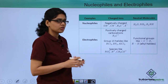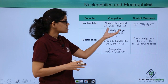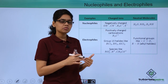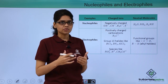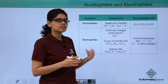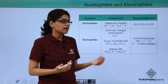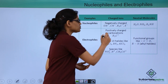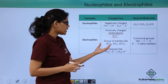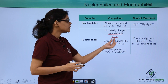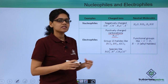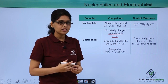So those are the examples of nucleophiles as charged species and neutral molecules. For electrophiles, charged ions should be positively charged. A typical example is the positively charged carbocation R₃C⁺. Group 13 halides like BCl₃, BH₃, and AlCl₃ also act as electrophiles.